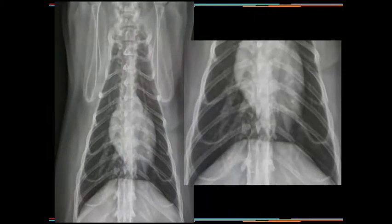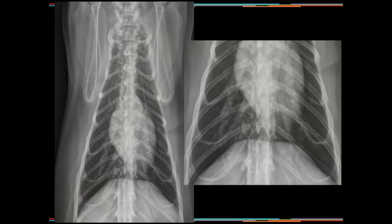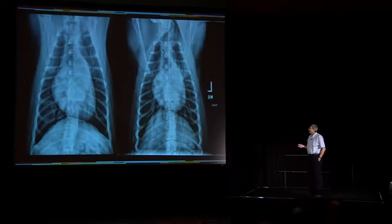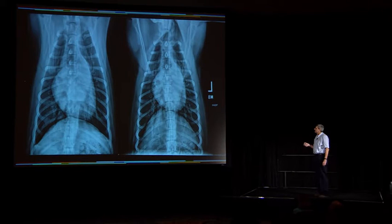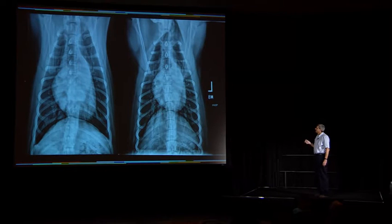On the ventrodorsal, you don't see those caudal lobar vessels as well because the dog is on its back, compressing this area due to gravity and the abdominal contents. On the dorsal ventral radiograph, you can see the pulmonary artery extending all the way past the diaphragmatic cupula and back over the diaphragmatic crura. Here's the pulmonary vein, and here's the caudal vena cava. Over on this side, here's the pulmonary artery extending all the way out and the pulmonary vein.